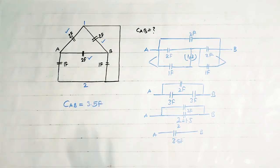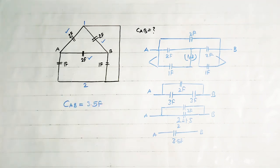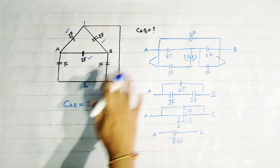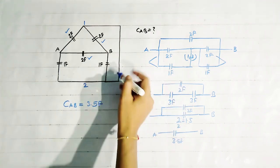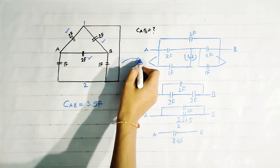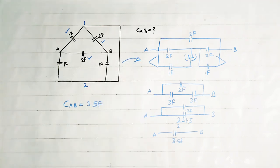In this way you can find the equivalent resistance or equivalent capacitance of any circuit. What you have to carefully see is which points in the circuit are at the same potential. By identifying the common potential points, you can redraw the circuit as we did in these questions. After that, you will be able to find the equivalent resistance or equivalent capacitance very easily.